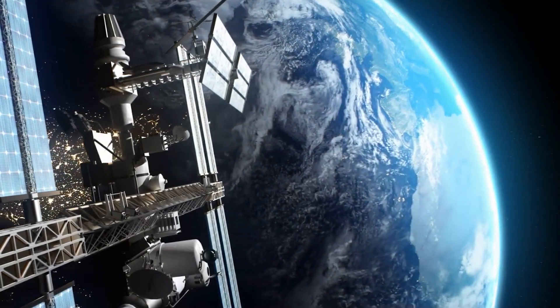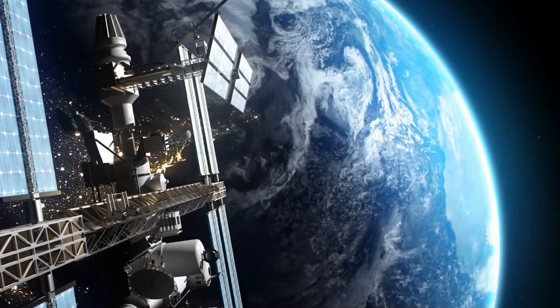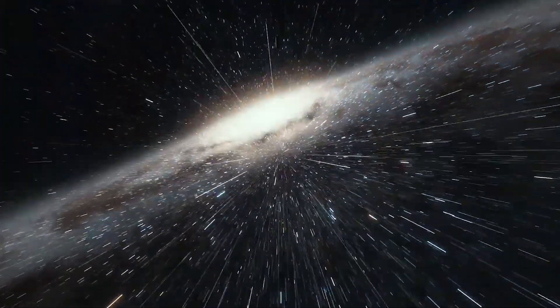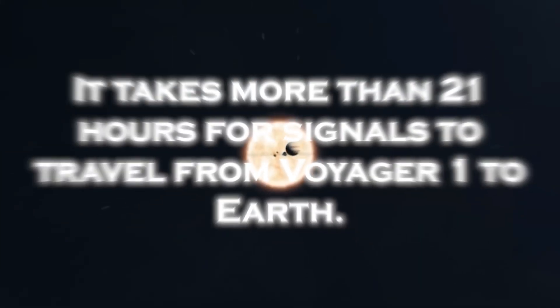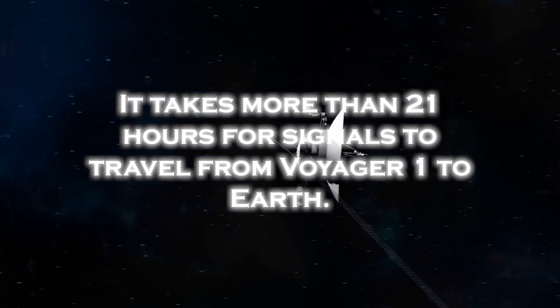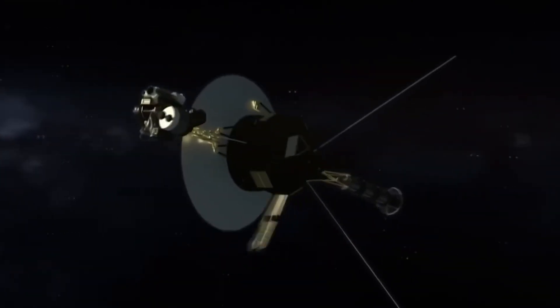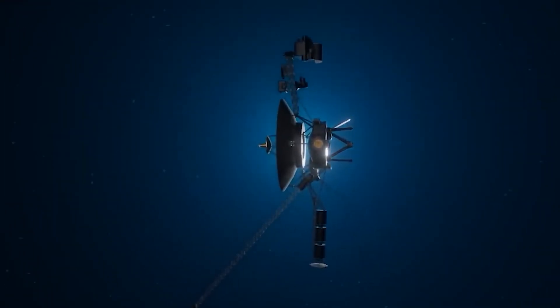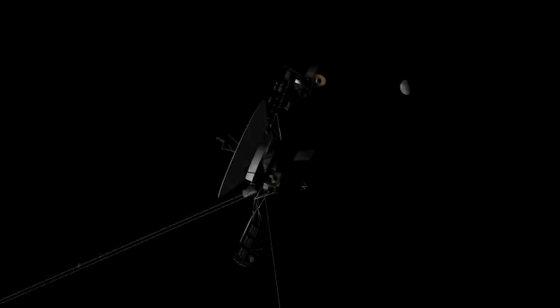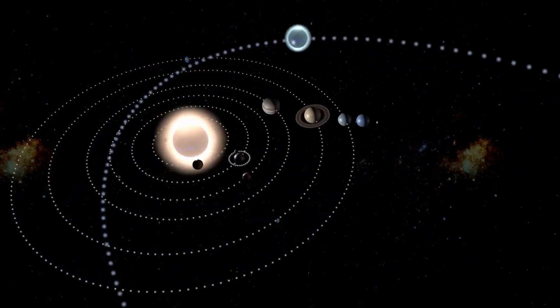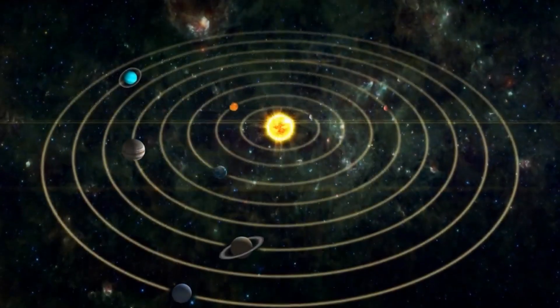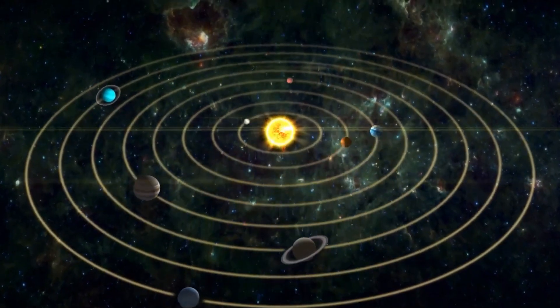However, the great distance between Voyager 1 and Earth presents a significant challenge to maintaining effective communication. As the spacecraft ventures into interstellar space, Voyager 1's signal strength has weakened. It takes more than 21 hours for signals to travel from Voyager to Earth. The weak signal, combined with interference from background noise, makes it difficult to transmit and receive data. In addition, the temperature transition from the heliosphere to interstellar space exposes Voyager 1 to different thermal conditions.